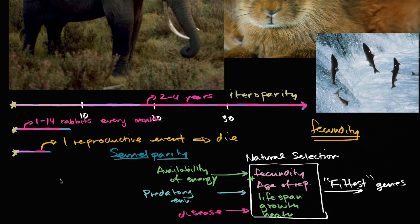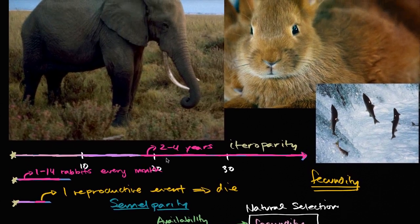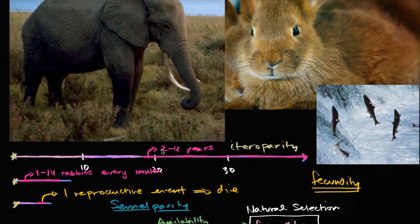The estimates I've seen is out of those thousands of eggs that get laid, only about three make it back. This was the example I saw for sockeye salmon. On average, only three of them make it back for the next year. So you have a huge amount of attrition. While in the case of an elephant, they invest more per offspring, and you have a much higher probability that each of those offspring will survive.